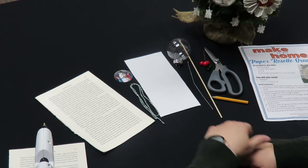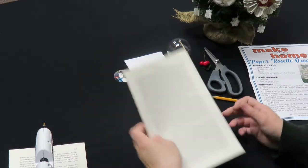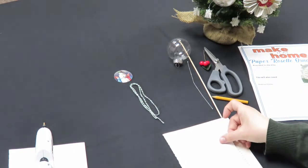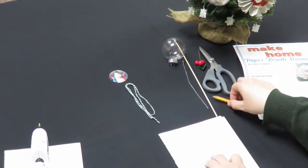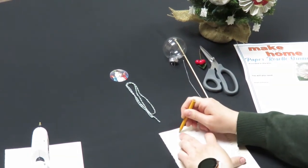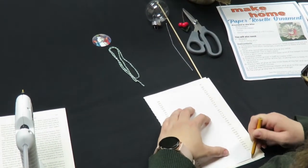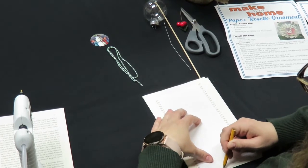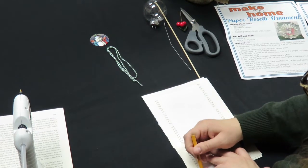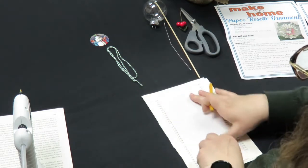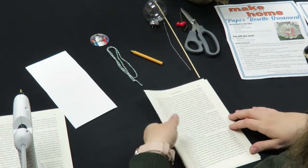We're going to make the paper rosette ornament first. You're going to take two book pages and a rectangle template, and you're going to trace around it. I'm going to cut the two pages out.